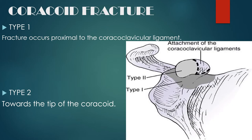Coracoid fractures are divided into Type 1 and Type 2. In Type 1, the fracture occurs proximal to the coracoclavicular ligament attachment — shown by the black dotted lines. In Type 2, the fracture occurs towards the tip of the coracoid process.